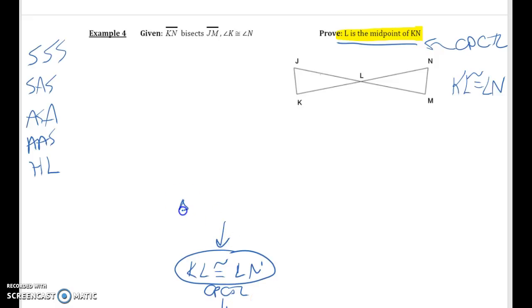I know that's reason will be CPCTC, and so that will come from some kind of triangle congruency: triangle something congruent to triangle something. And we haven't picked a method yet so we're not sure what we're going to put in there and what our correspondence is. So let's work on the rest of the proof now.